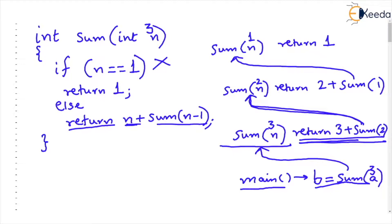So sum gets called again and the parameter n this time which was 3 will now become 2. But what happens when sum n where n is 2 runs, it also goes in else as if is false and it says it will return n plus that is 2 plus sum of n minus 1 that is sum of 1 but this is a recursive call.